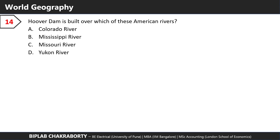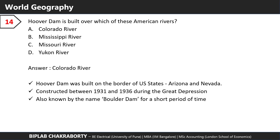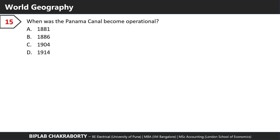The Hoover Dam is built over which of these American rivers? The answer is the Colorado River. Hoover Dam was built on the border of the US states of Arizona and Nevada. It was constructed between the years 1931 and 1936 during the Great Depression, and for a short period it was also known as Boulder Dam.